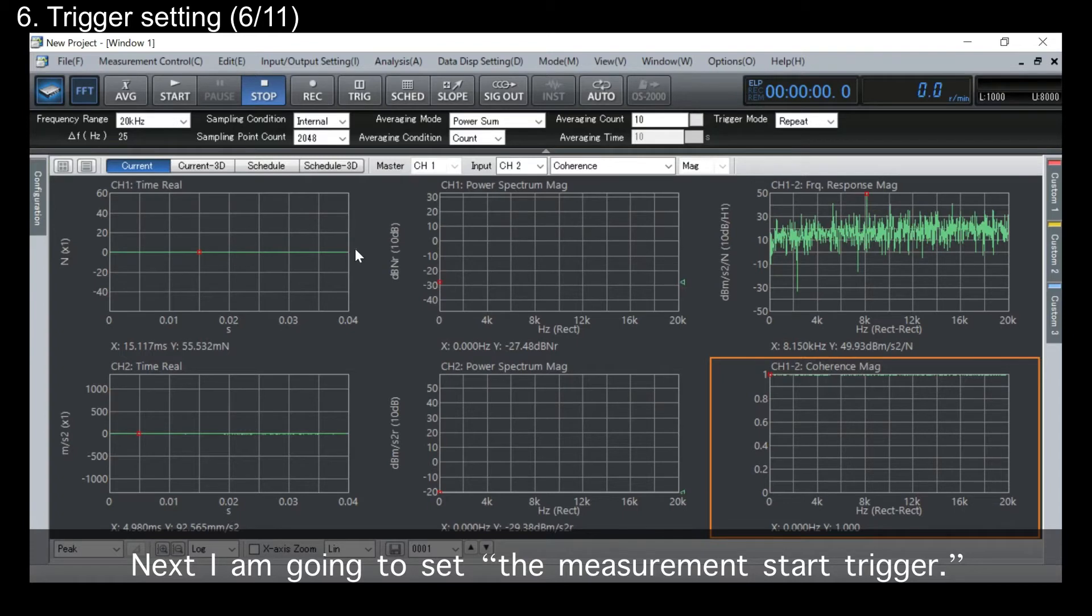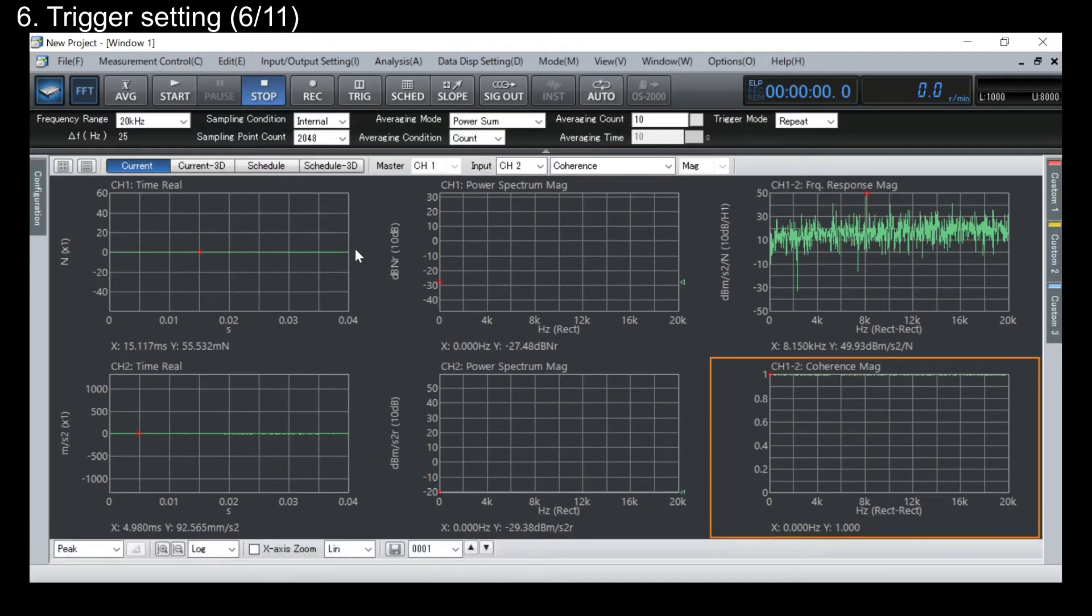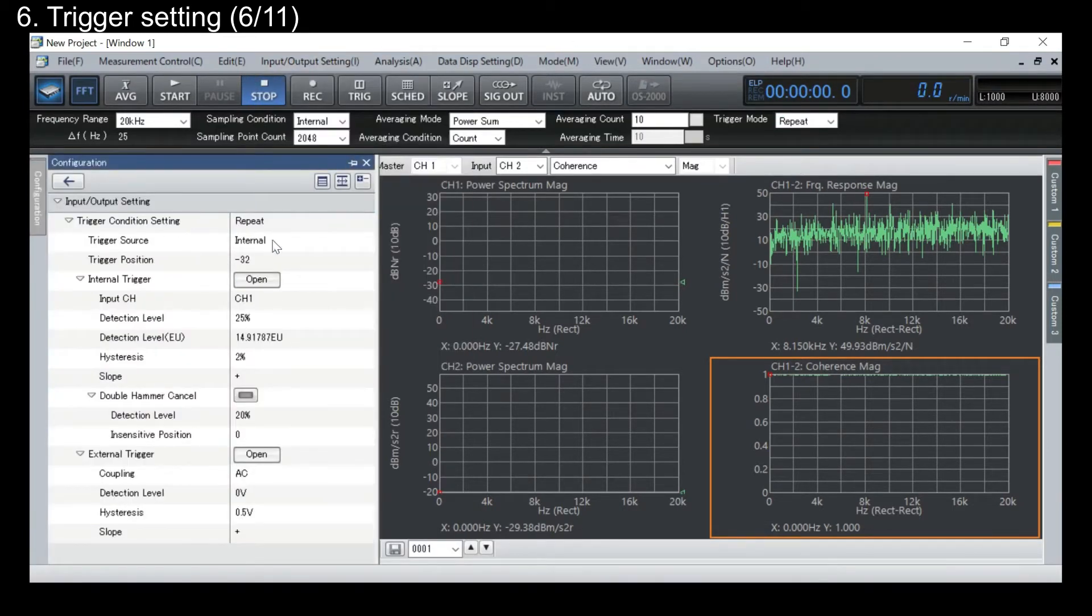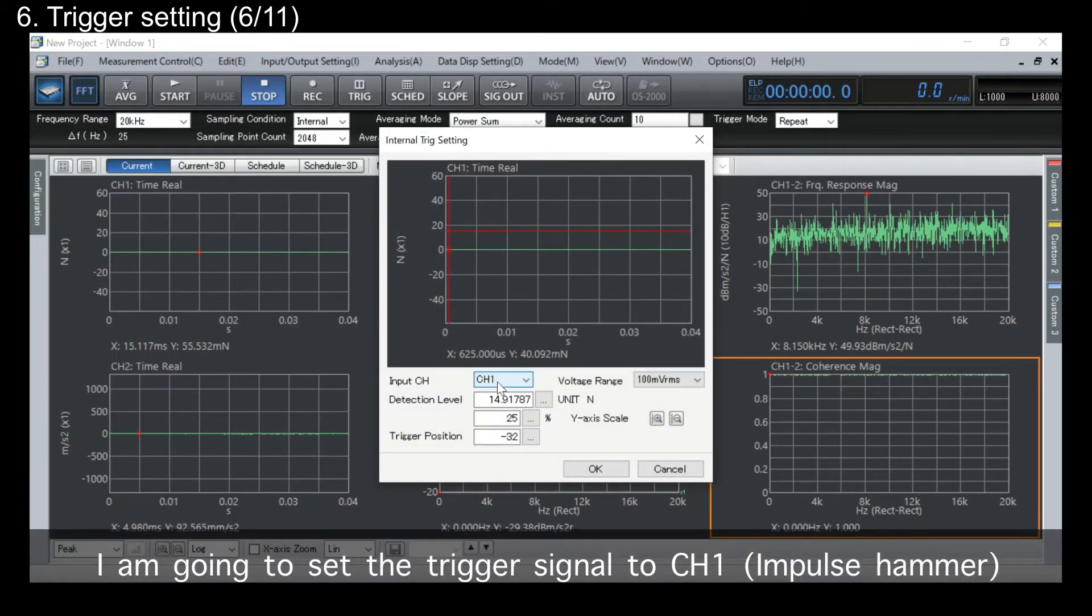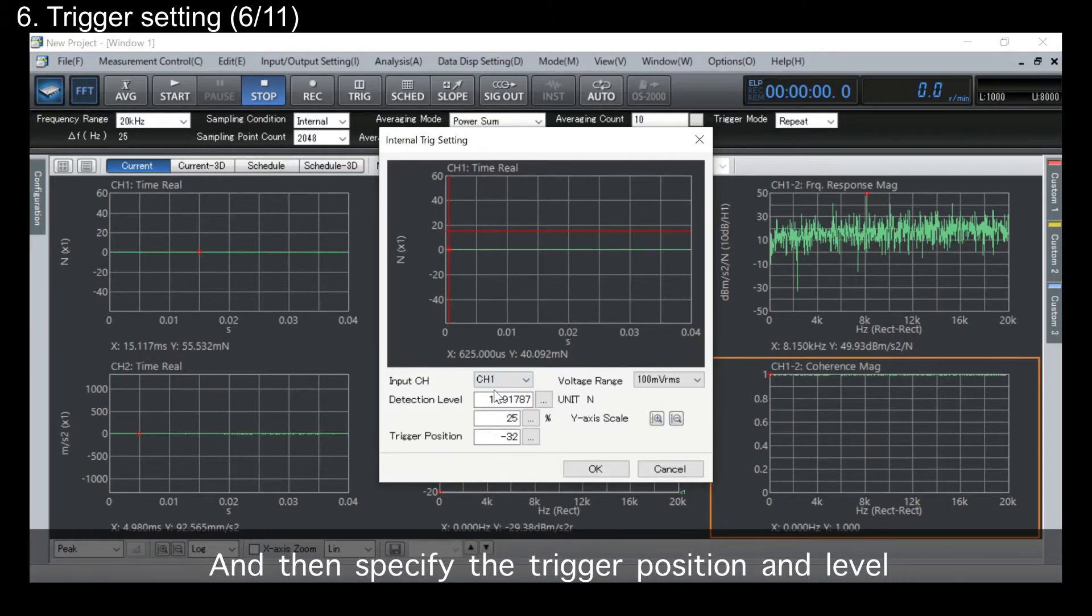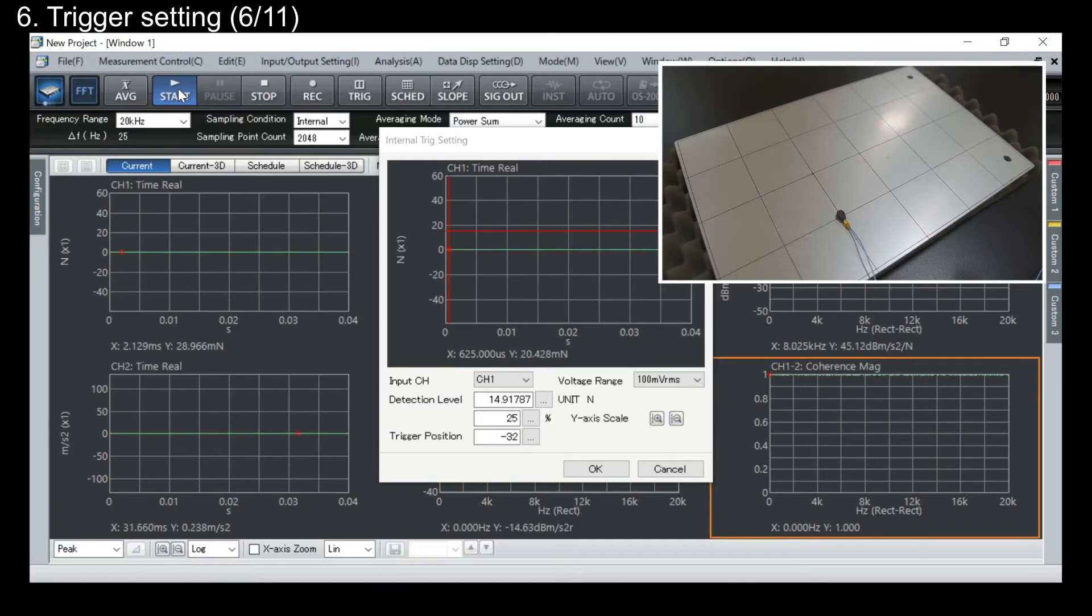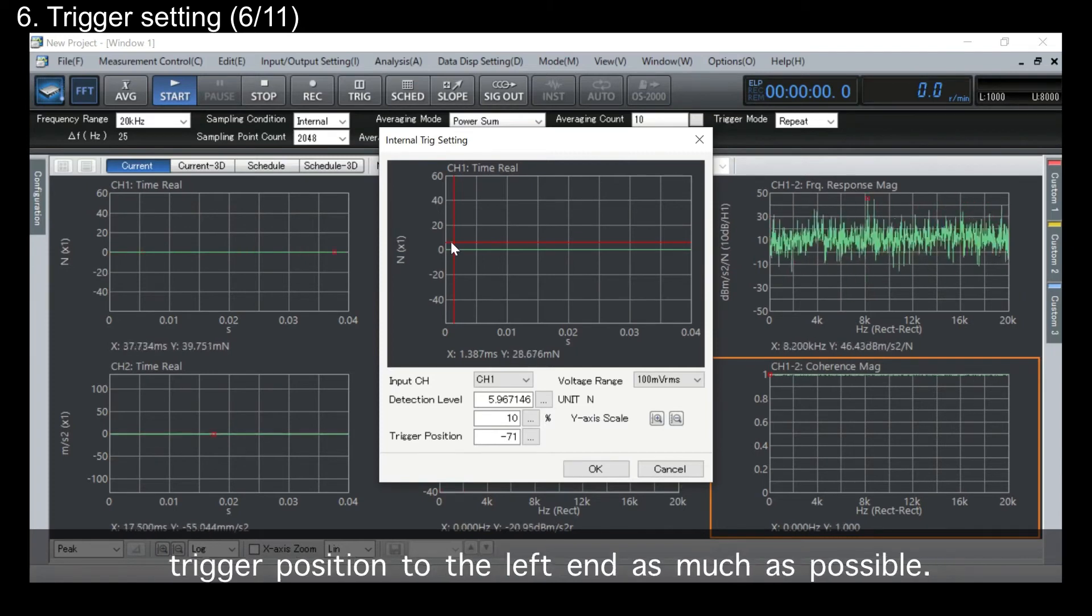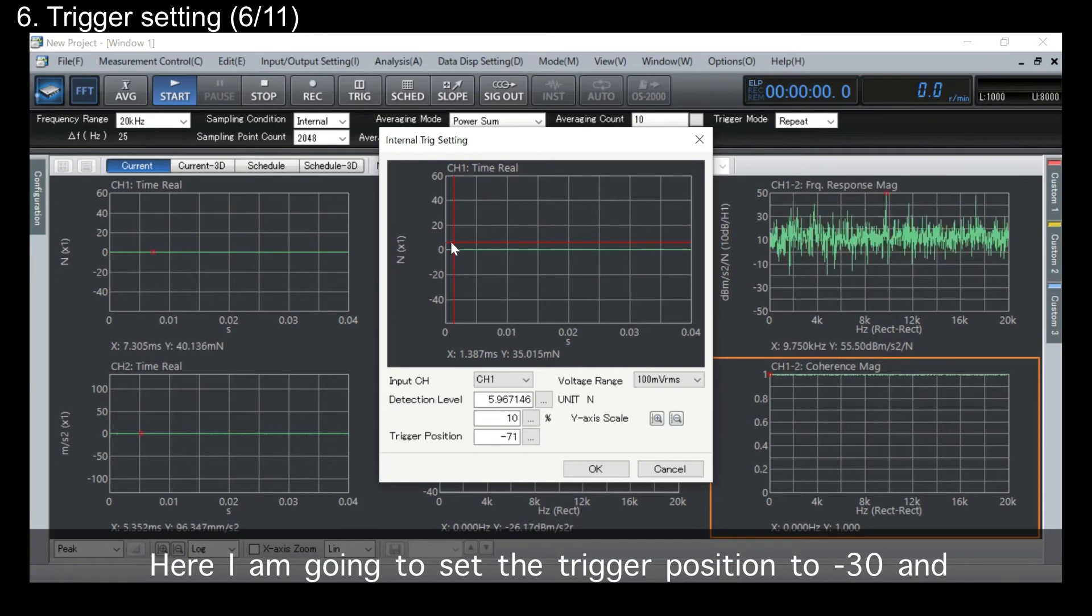Next, I'm gonna set the measurement start trigger. The trigger function enables you to capture and enter your waveform in the FFT window. First, set the trigger mode to repeat. And then display the trigger setting window. I'm gonna set the trigger signal to channel 1 impulse hammer. And then specify the trigger position and level by doing some test hits.